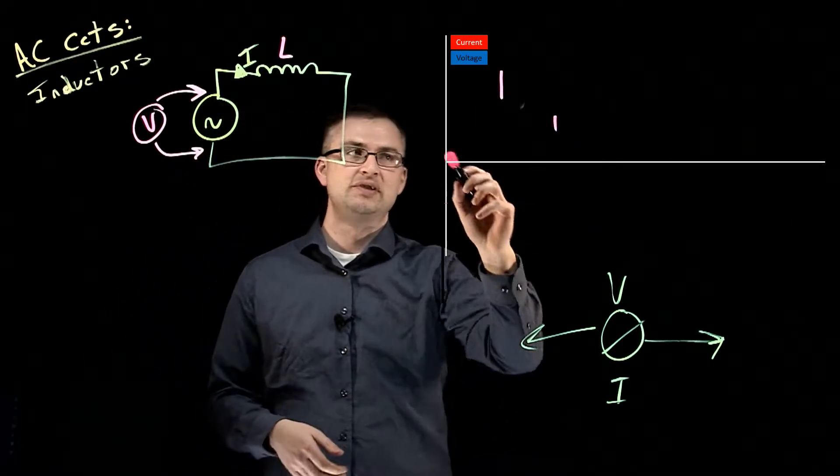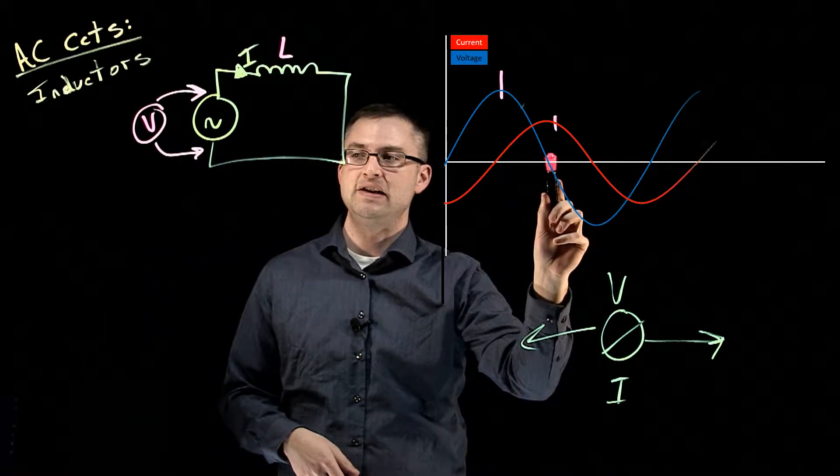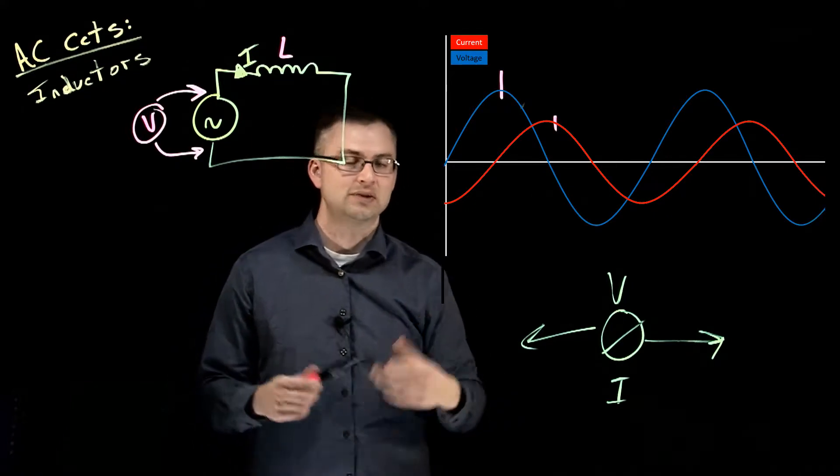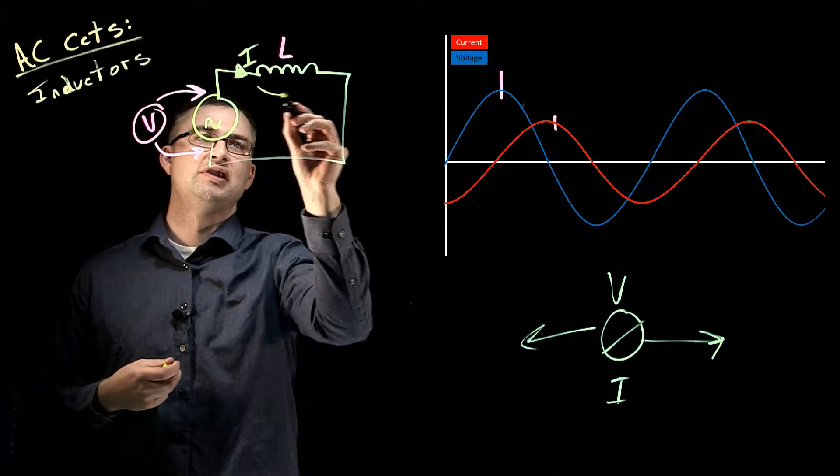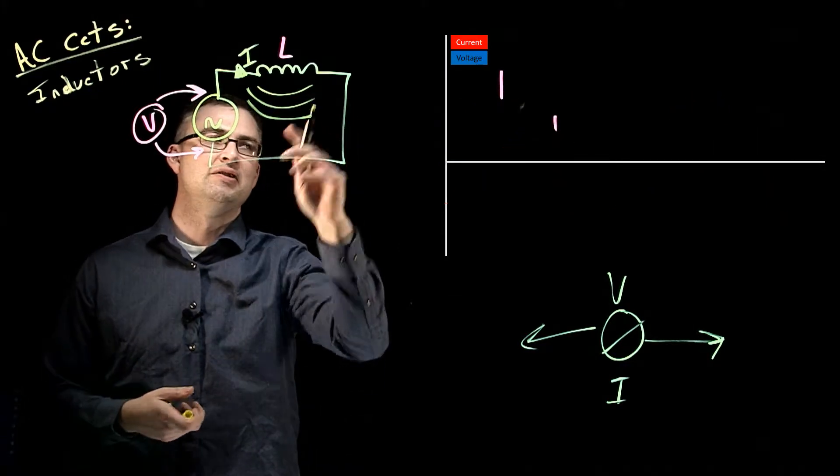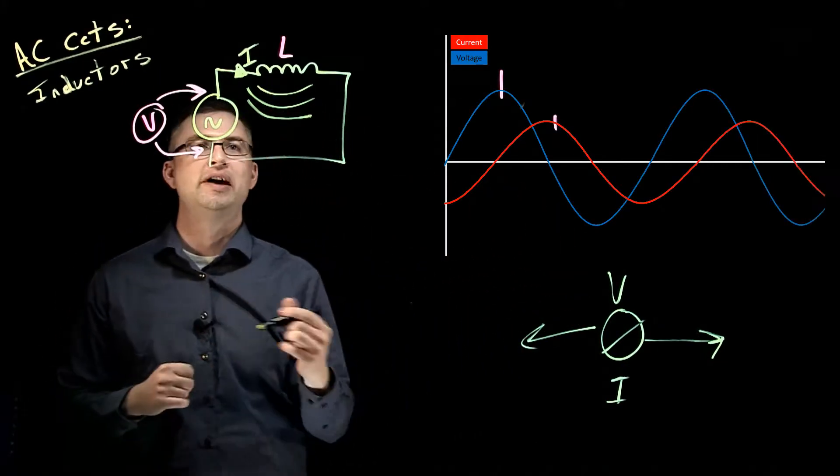That's really bizarre. At zero volts here, our current is actually at max. How does that happen? It's quite a complicated process. Remember, we start to build a magnetic field here, and when it starts to collapse, it creates its own EMF.